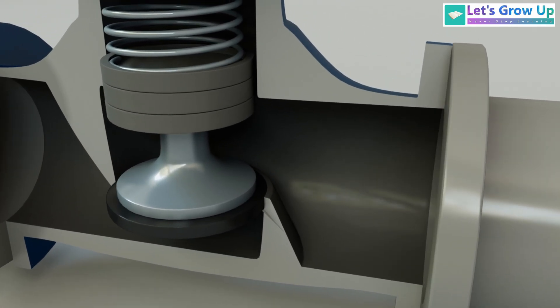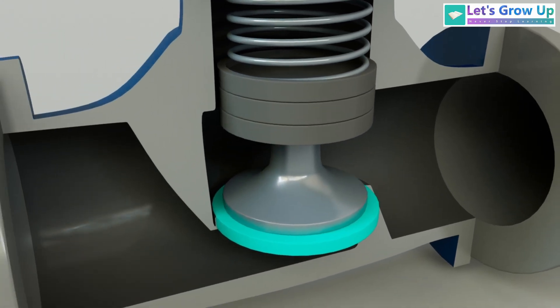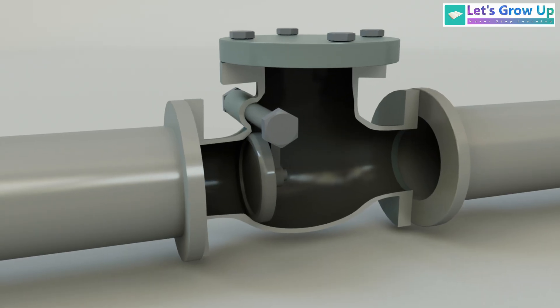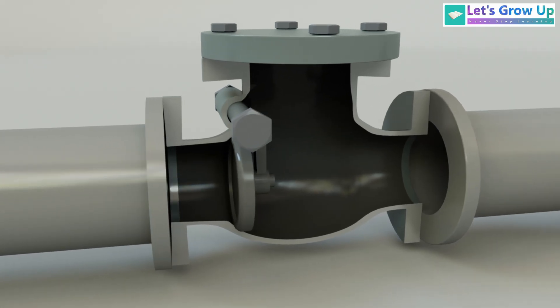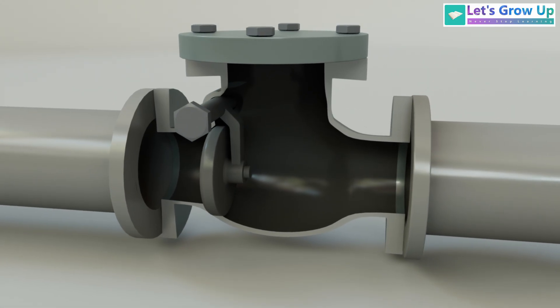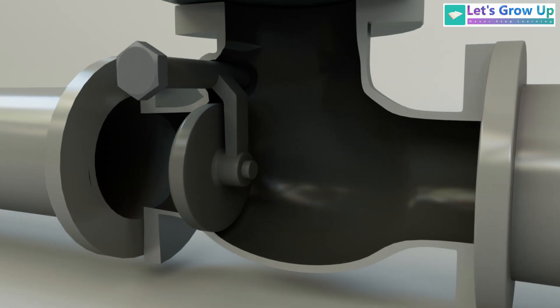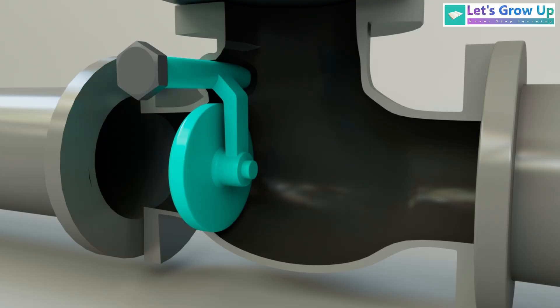This is a swing type non-return valve. The swing type valve is one of the most common and versatile NRVs that you will encounter. It is known for its simplicity and minimal pressure drop. A swing valve features a hinged disc, similar to a door, that hangs from a pivot point within the valve body.